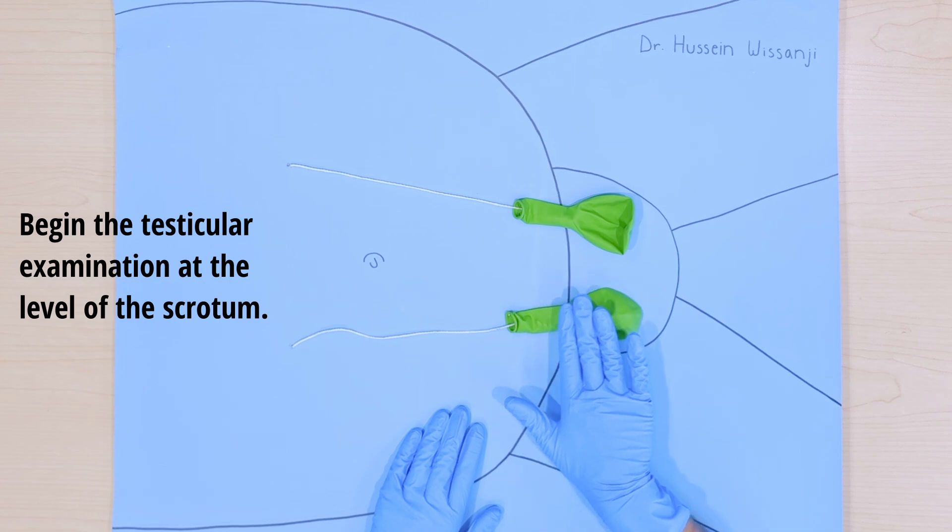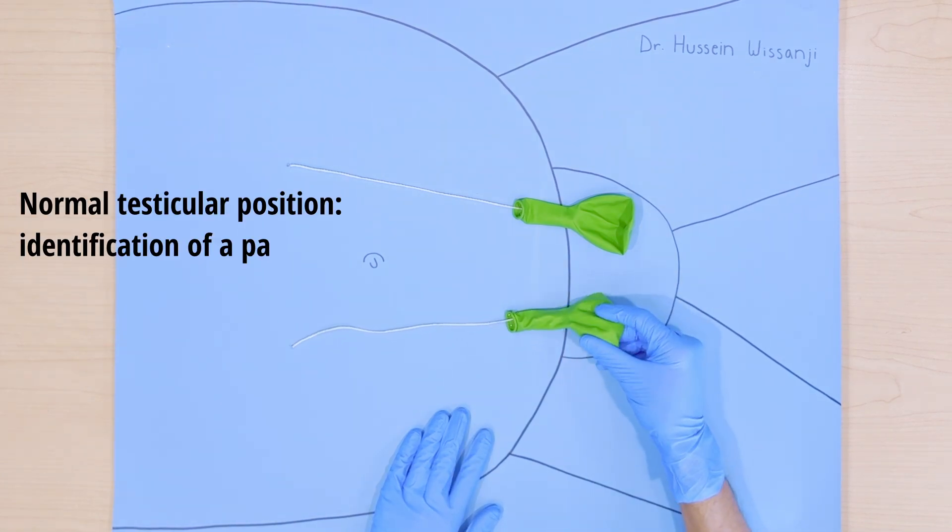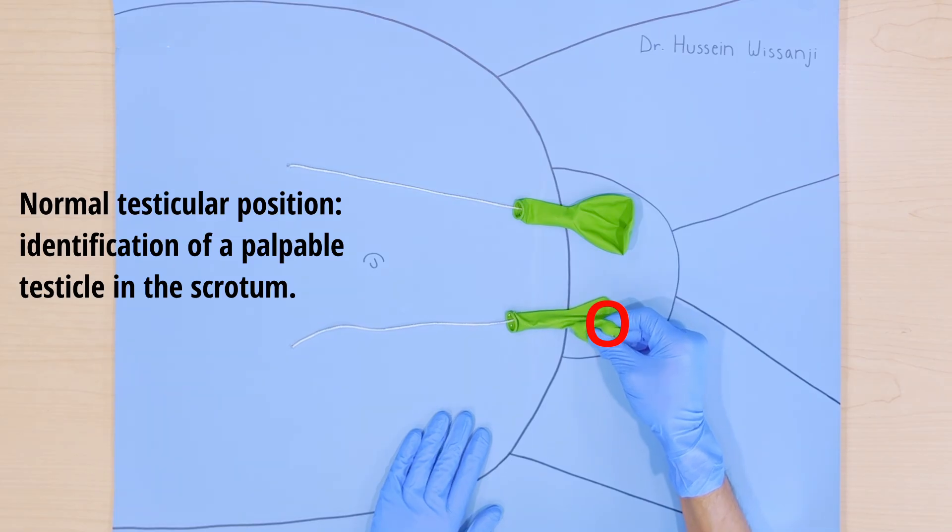The first step of the exam is to take your right hand and try to locate the testicle in the scrotum. It should be palpable as you can see in the red circle in this video.